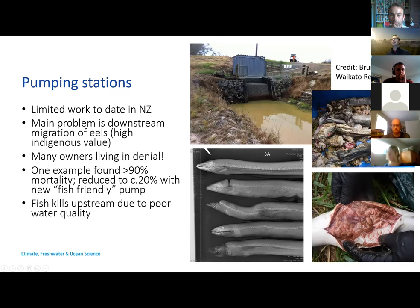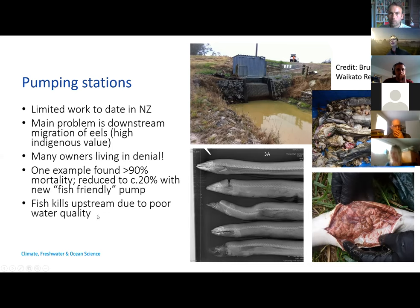They recently replaced that pumping station with one of those fish-friendly pump designs — an Archimedes screw — and found that they've reduced the mortality to only about 20%. That's obviously much better than 90%, but still isn't particularly fish-friendly if you're still killing 20% of your fish. Upstream of these pump stations we're also seeing really poor water quality again — dissolved oxygen at zero for days on end.